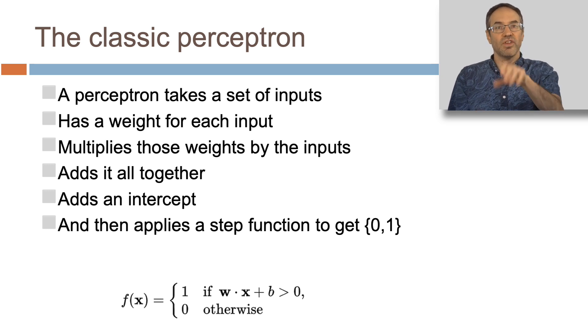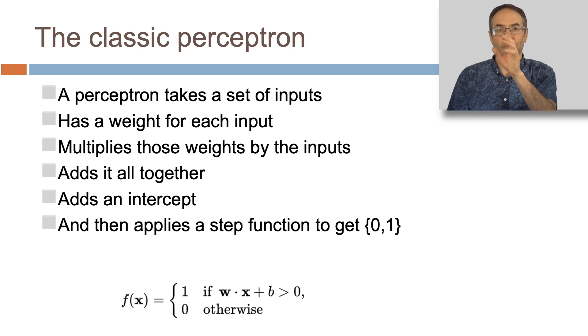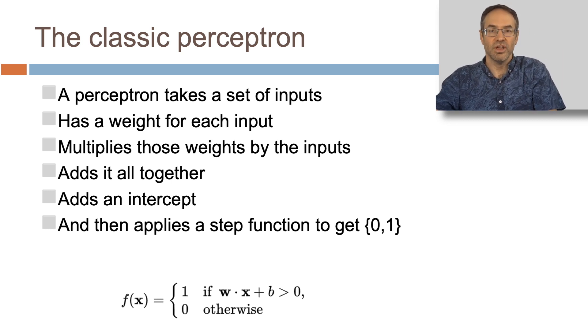A perceptron takes a set of inputs, has a weight for each input, multiplies those weights by the inputs, adds it all together, adds an intercept, and then applies a step function. Remember step regression from earlier in this week? It applies a step function to get 0 or 1. The step function is basically that if the entire function is greater than a certain value, in this case zero, you output a 1, and otherwise you output a 0.